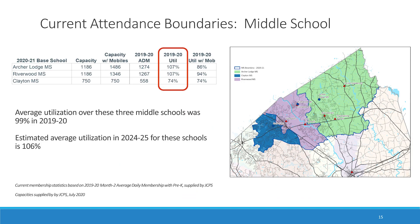The current boundaries for three middle schools are shown here. Using brick and mortar capacity, the current range of utilization is 33 points — from a high of 107 percent at Riverwood and Archer Lodge to 74 percent at Clayton. The average utilization over these three schools was 99 percent last year, and the estimated utilization in five years is 106 percent.